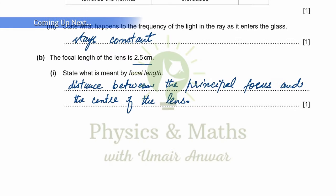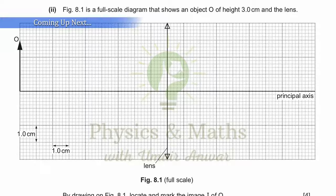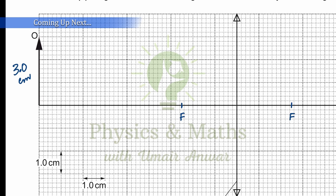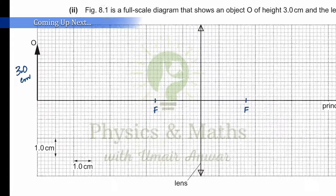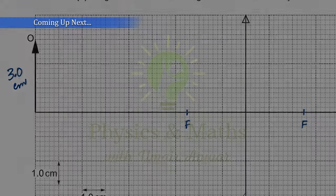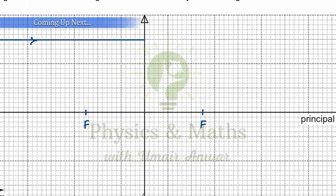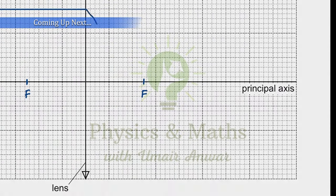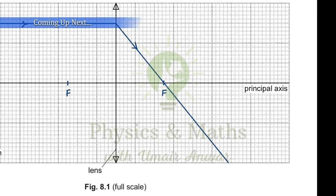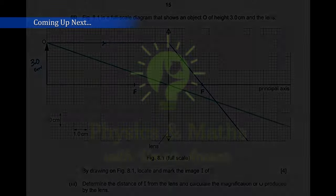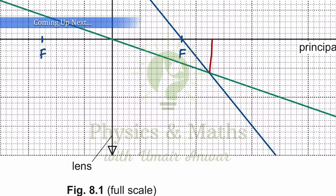The focal length of the lens was given to be 2.5 centimeters, so first of all we would be marking it on both sides. This is the principal focus on one side and it is the principal focus on the other side. For the formation of image we can use any of the three rays. I'm using the first ray which goes parallel to the principal axis till the lens, and after passing through the lens it goes from the principal focus. The second ray goes through the optical center and continues its path undeviated. Where the two rays are intersecting each other, that would be the point where the image would be formed.